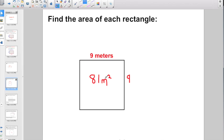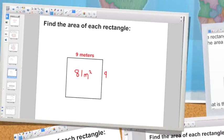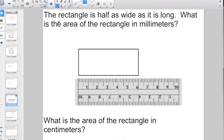How about this one? The rectangle is half as wide as it is long. Well, how long is it right now? According to this, it's 6 centimeters long. So if it's 6 centimeters long and it's half as wide, that would mean that it would be 3 centimeters. But what is the area of the rectangle in millimeters?